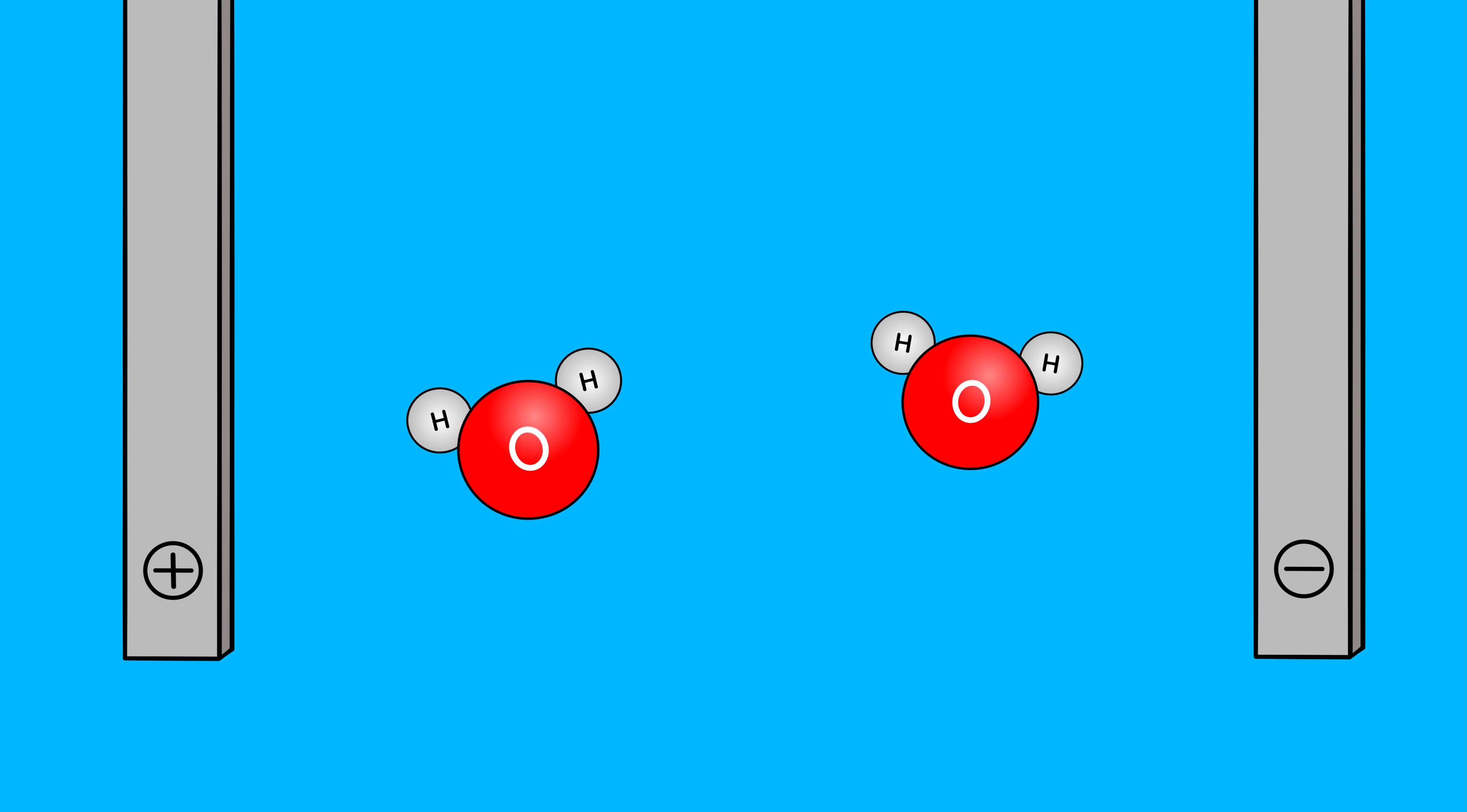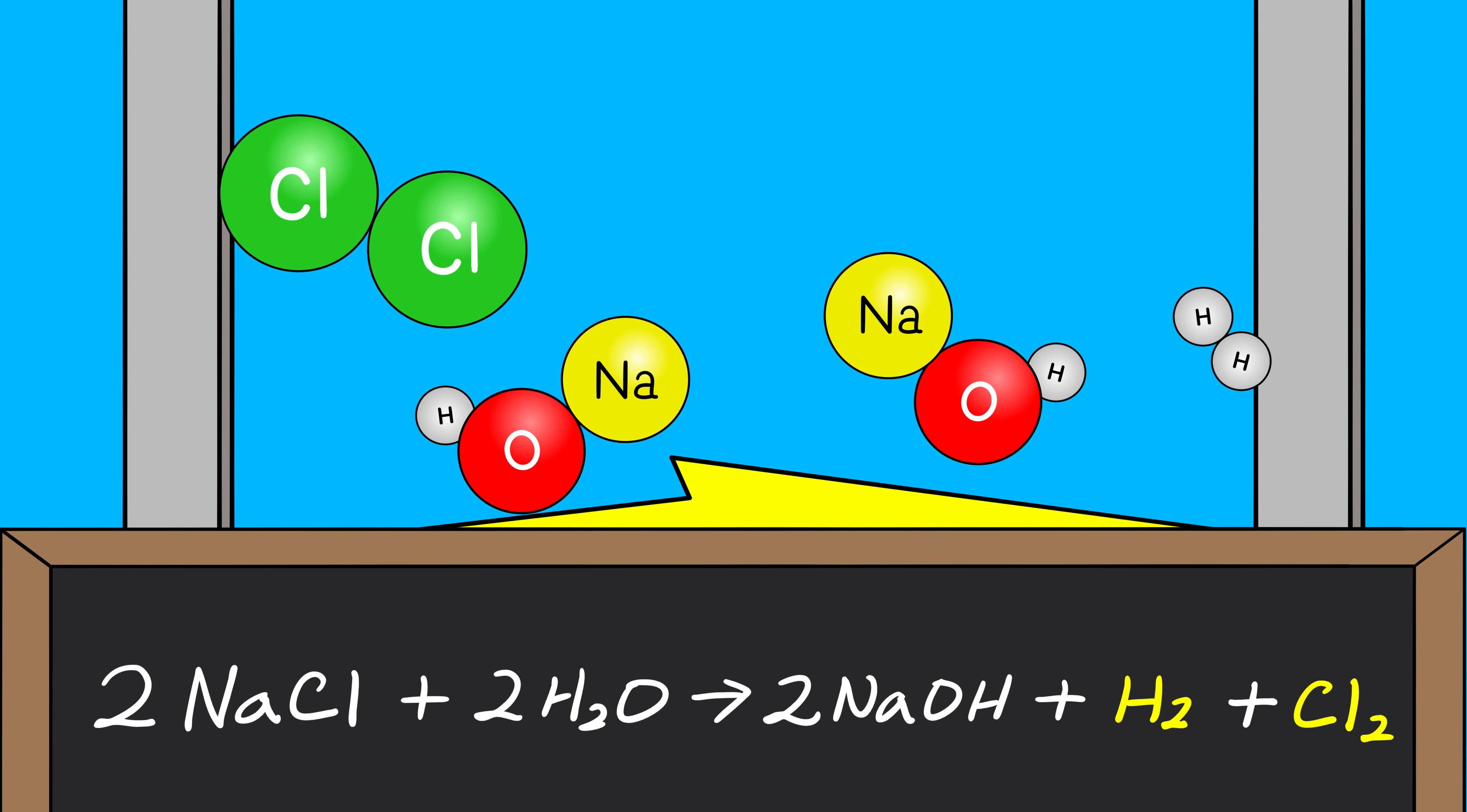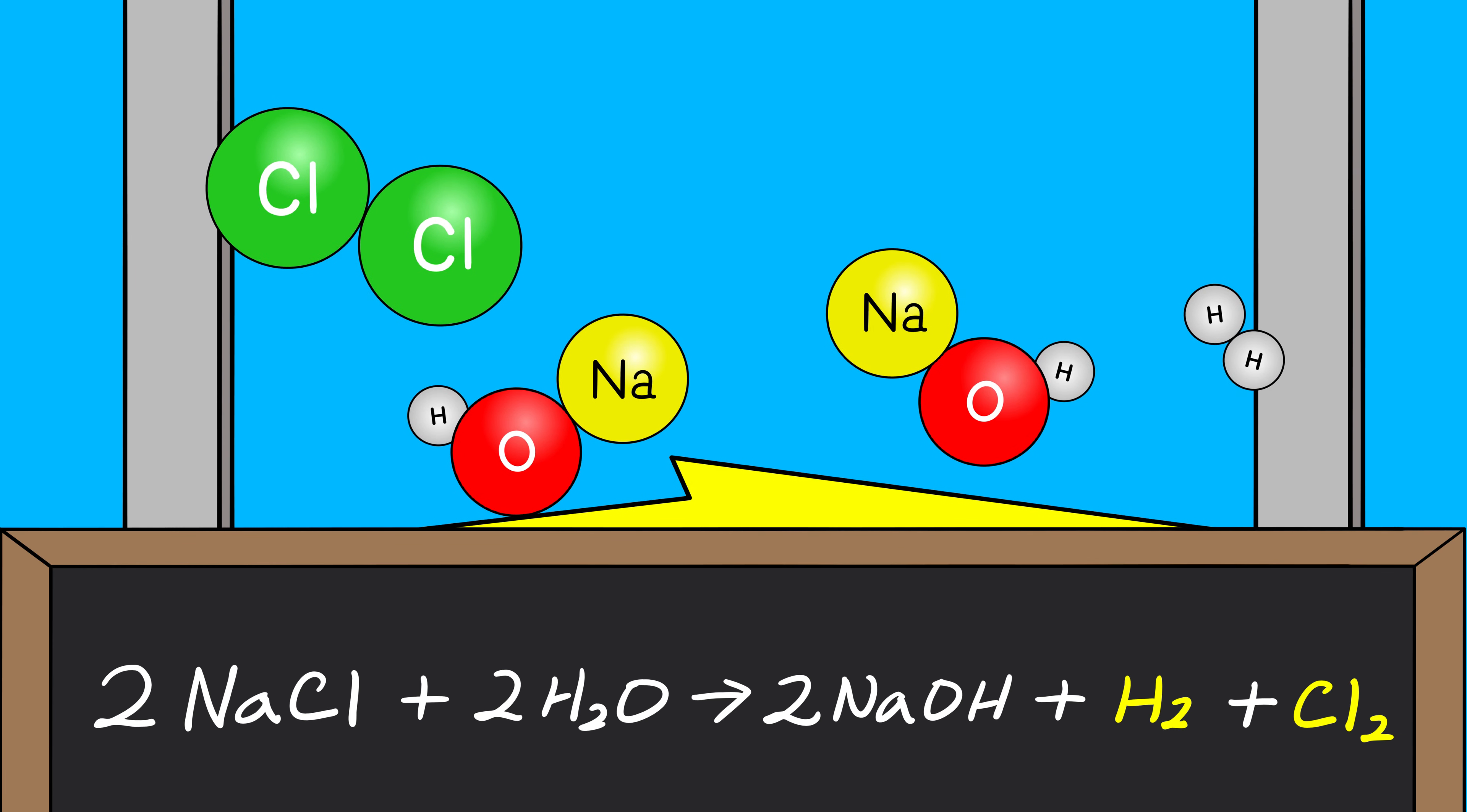we need to add some electrolytes. For example, sodium chloride or salt, which is convenient considering our submarine is constantly surrounded by seawater. However, when you zap seawater, you get hydrogen and chlorine gas with some sodium hydroxide instead of hydrogen and oxygen. This is no good, especially since chlorine gas is very toxic.